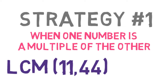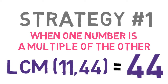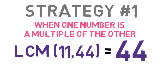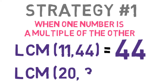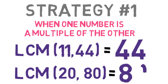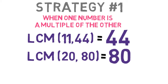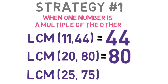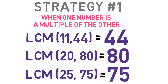Notice that 44 is a multiple of 11. Therefore, the LCM of 11 and 44 is 44. As another example, the LCM of 20 and 80 is 80 because 80 is a multiple of 20. And the LCM of 25 and 75 is 75 because 75 is a multiple of 25.